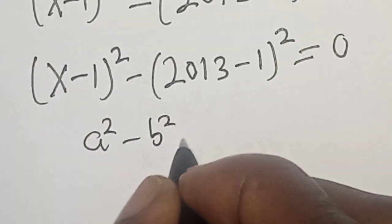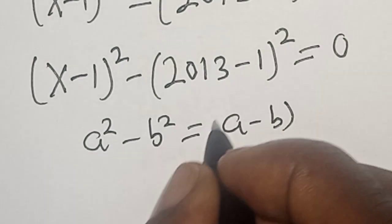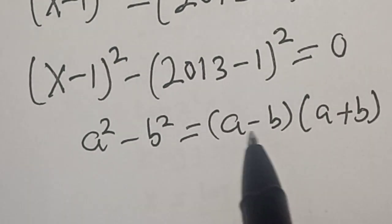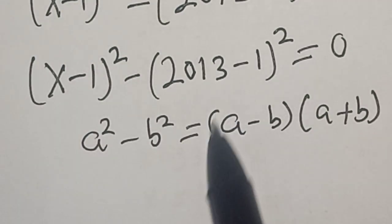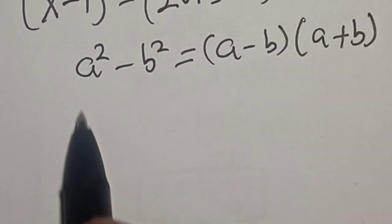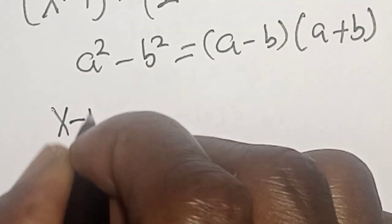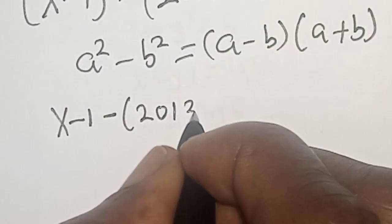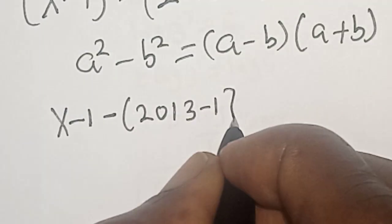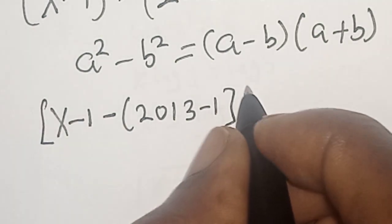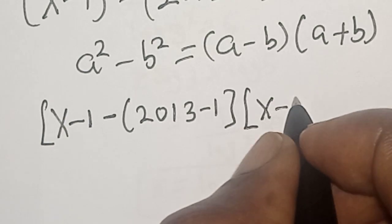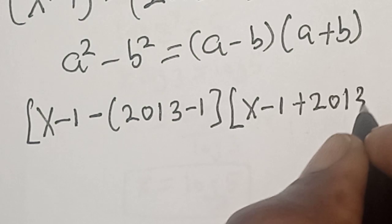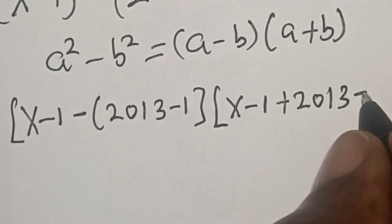That is, if you have a² minus b² it is equal to (a - b) multiplied by (a + b). In this case, our a is (x - 1) and b is (2013 - 1). So we have (x - 1) minus (2013 - 1), multiplied by (x - 1) plus (2013 - 1), all equal to zero.